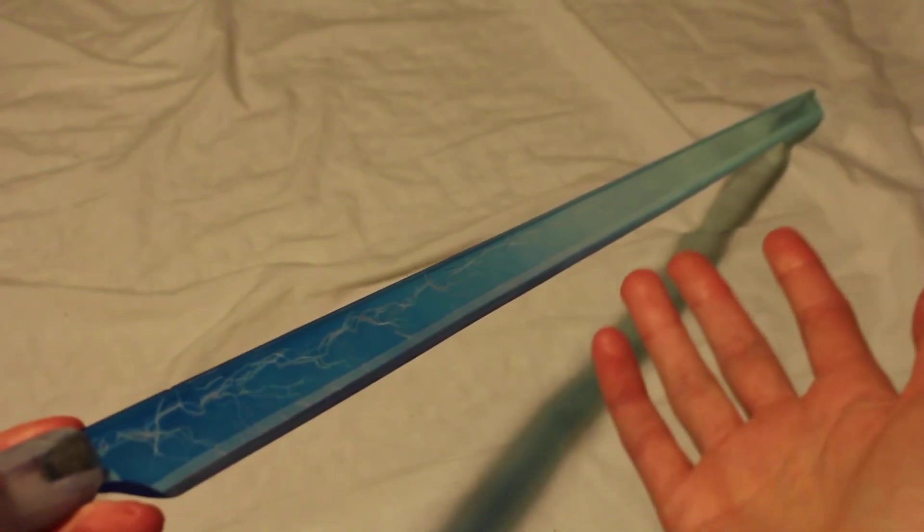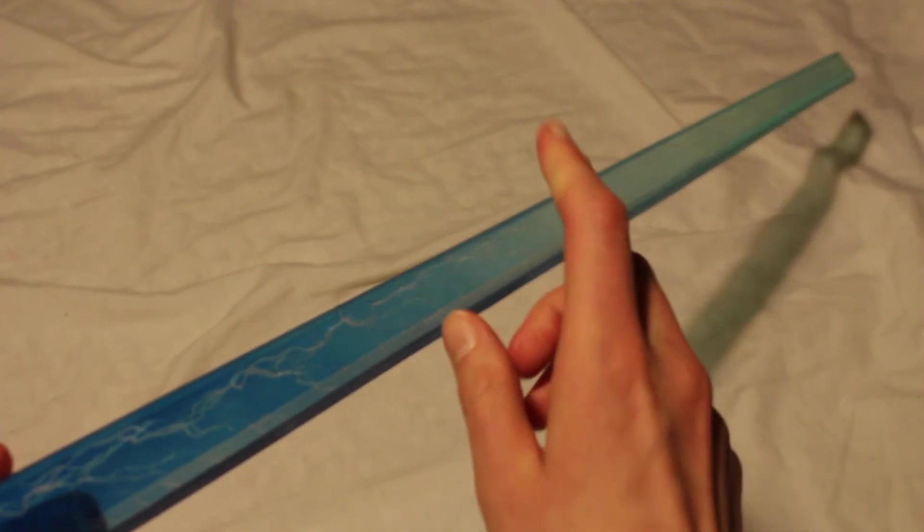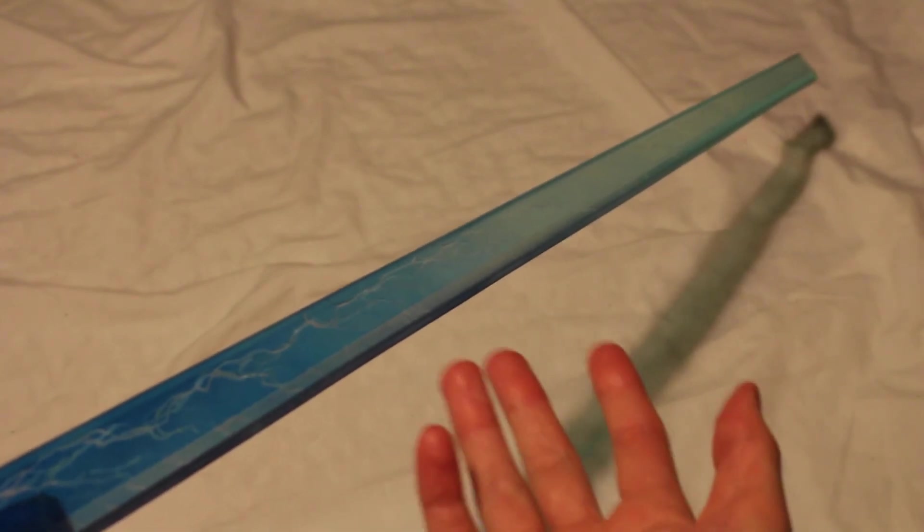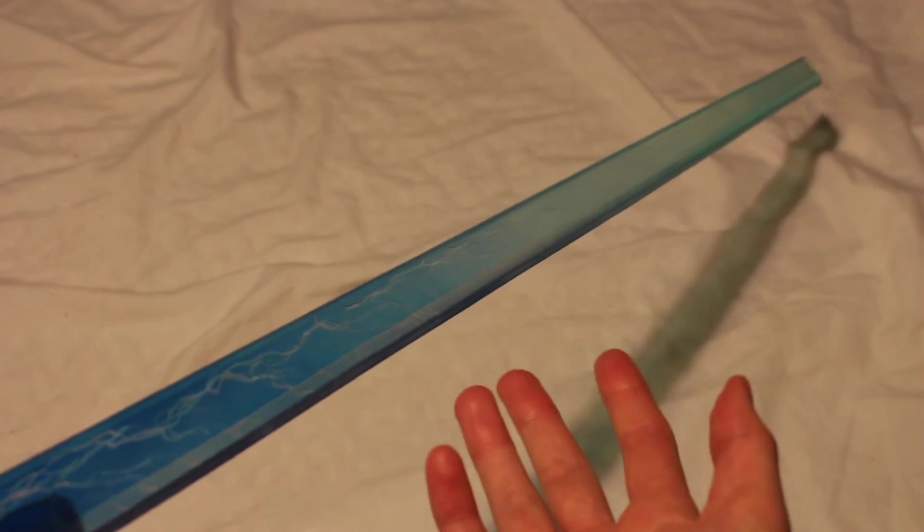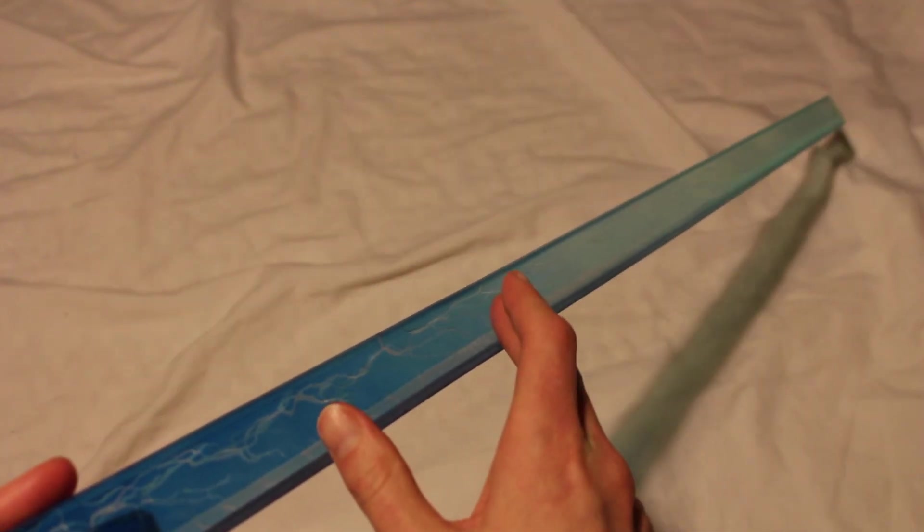So one final thought on this is I received this as a Guess What Box. So Ripper Blades does something called Guess What Boxes. And they have a few different price tiers. I got this from their $75 price tier. And, as I said, the Ninja Ripper blade retails for $80 on their site. But since it also has the two-tone colors, that would put this blade up to $100. So I essentially got a $100 blade for $75 plus shipping. So not too bad of a deal.